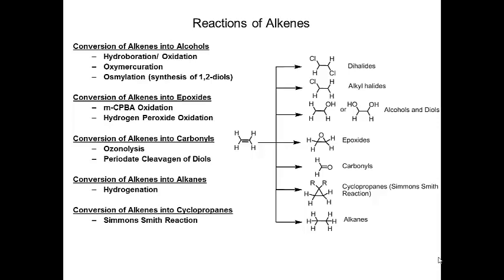This video focuses on conversion of alkenes into alcohols and alkenes into epoxides. We'll talk about hydroboration-oxidation, oxymercuration, and osmylation. These reactions basically involve adding H and OH across the double bond — H adds to one side and OH adds to the other side.